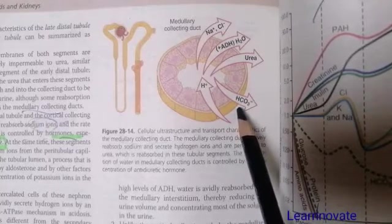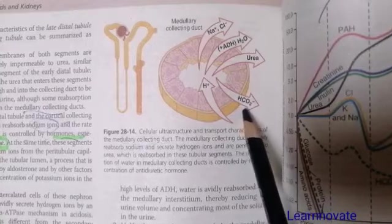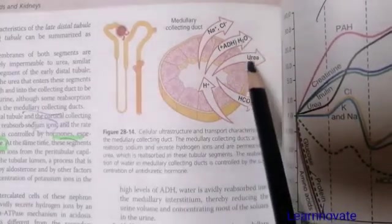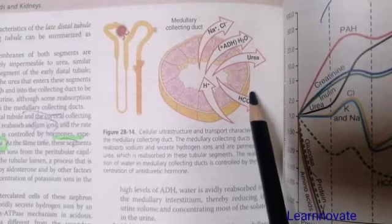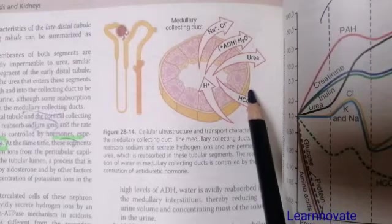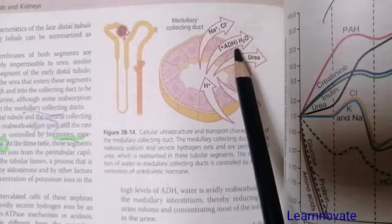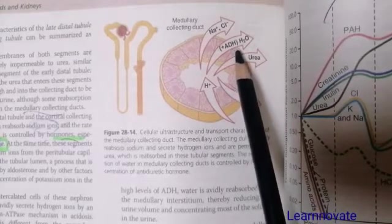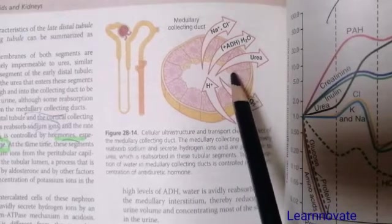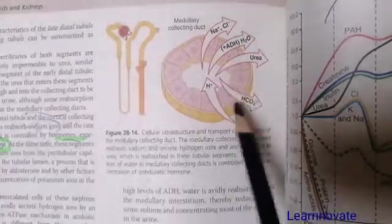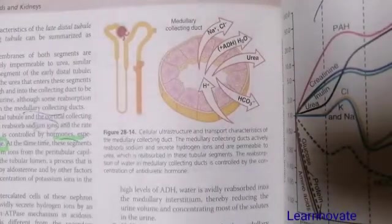If the body needs to excrete large amounts of water, ADH will not act, and large amounts of water will be excreted in the urine. In a dehydration condition, ADH increases and acts on the distal convoluted tubule and medullary collecting duct, causing massive water reabsorption, resulting in concentrated urine. In this way the body manages acidosis, alkalosis, dehydration, and over-hydration conditions.